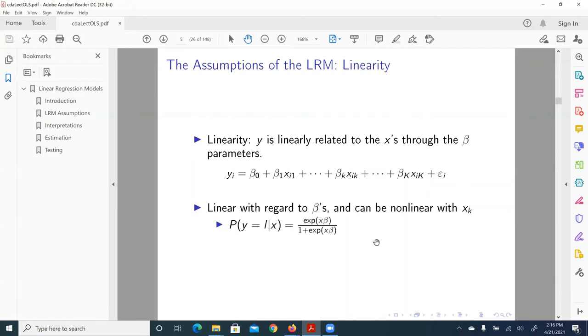Well, here is an exception. Let's say the probability of y equal to a certain response level given x is a function of exponential of x beta over 1 plus exponential of x beta. So in this case, the probability here is not linear with regard to beta. It is non-linear with regard to beta. It is also non-linear with regard to x. In this case, we can say this is non-linear model. And the linearity assumption is violated, as opposed to the previous equation.